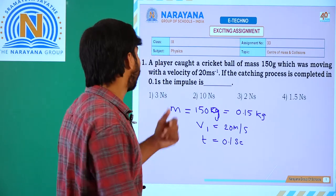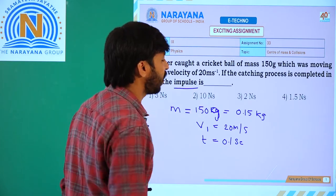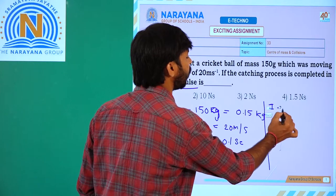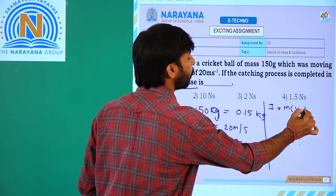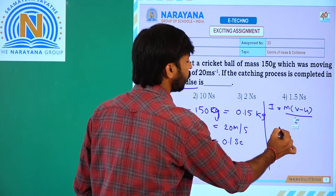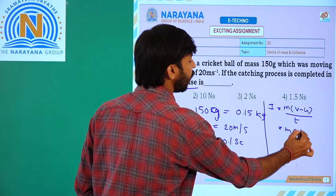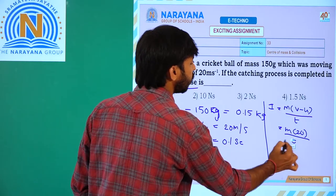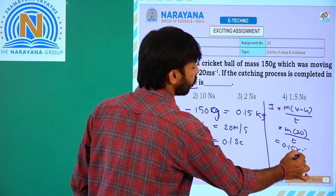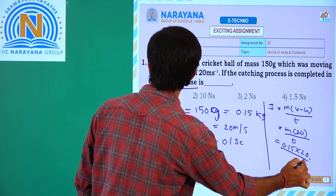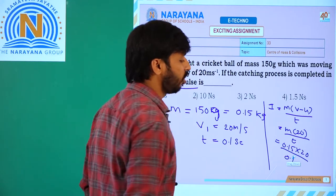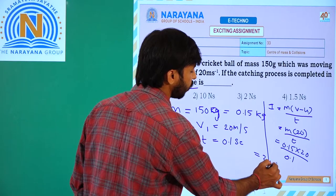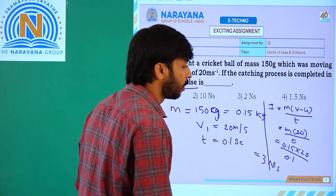We need to find out the impulse. Impulse is equal to change in momentum. So impulse I is equal to M into (V minus U) divided by T. That is M into (20 minus 0) divided by T, equal to 0.15 into 20 divided by 0.1, which gives 3 Newton-seconds.